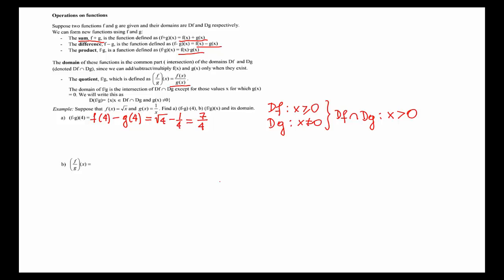For the part b, we are to actually find the formula for the quotient f over g. We have to find what is the f over g at any input x, and by definition, this is f of x divided by g of x,